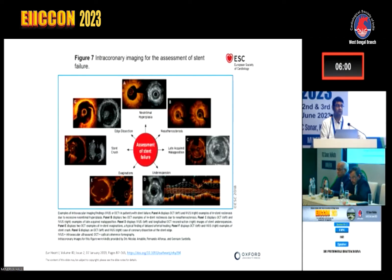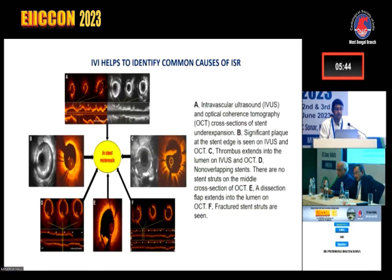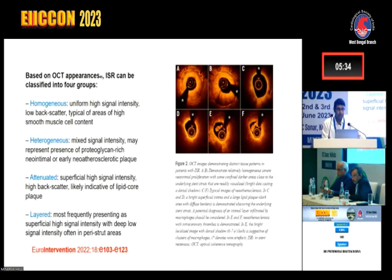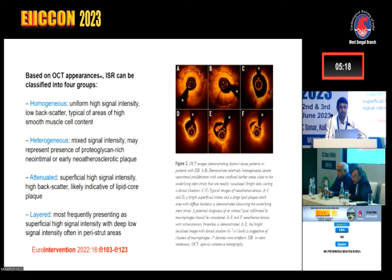Imaging has various roles in managing ISR. It can detect neointimal hyperplasia, neoatherosclerosis, late acquired malapposition, under-expansion, and stent crush. Imaging should be a class I indication for ISR-targeted PCI. Based on OCT appearance, ISR can be classified into four groups: homogeneous (uniform high signal density, low backscatter, typical of neointimal hyperplasia); heterogeneous (mixed signal density, may represent proteoglycan-rich neointima or neoatherosclerotic plaque); layered; and heterogeneous-layered — the latter two being most common in DES restenosis.